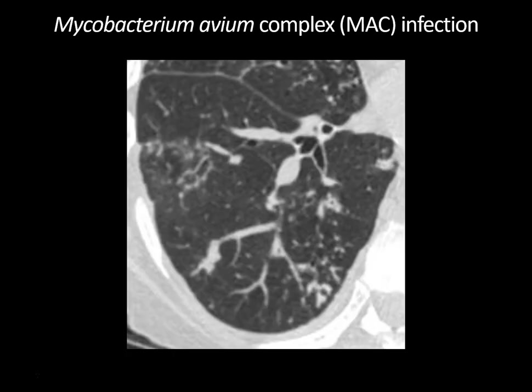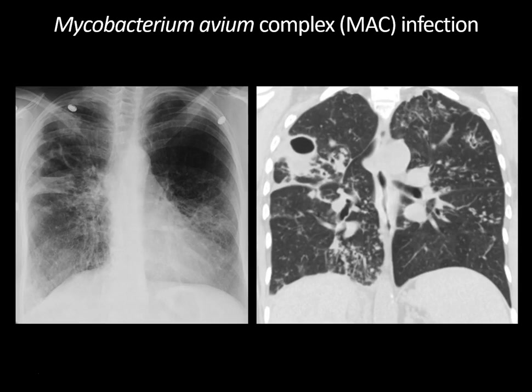Here's a close-up view of that right lower lobe tree-in-bud nodularity. You can see that the distal bronchioles are impacted. This is nonspecific and we can see this with infectious or inflammatory bronchiolitis, bronchopneumonia, or even aspiration, but it does indicate distal small airway impaction. And here we see the chest x-ray corresponding to the coronal reformatted CT chest, nicely correlating that right upper lobe cavity, the right lower lobe tree-in-bud nodularity, and the bronchiectasis.